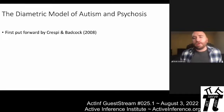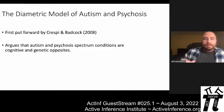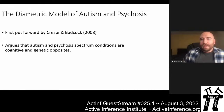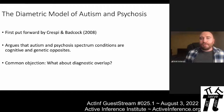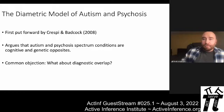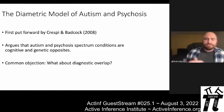The diametric model of autism and psychosis was first put forward by Crespi and Badcock in a 2008 BBS paper. Very simply put, it's the idea that autism spectrum conditions and psychosis spectrum conditions are cognitive and genetic opposites. Before getting into the evidence, I want to address the most common objection: how can the diametric model be true given that some people diagnosed with an autism spectrum condition experience psychosis and vice versa?